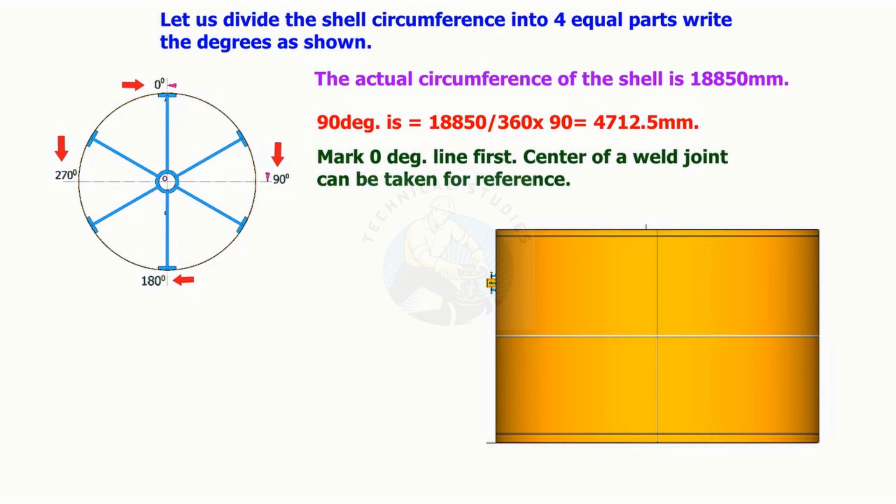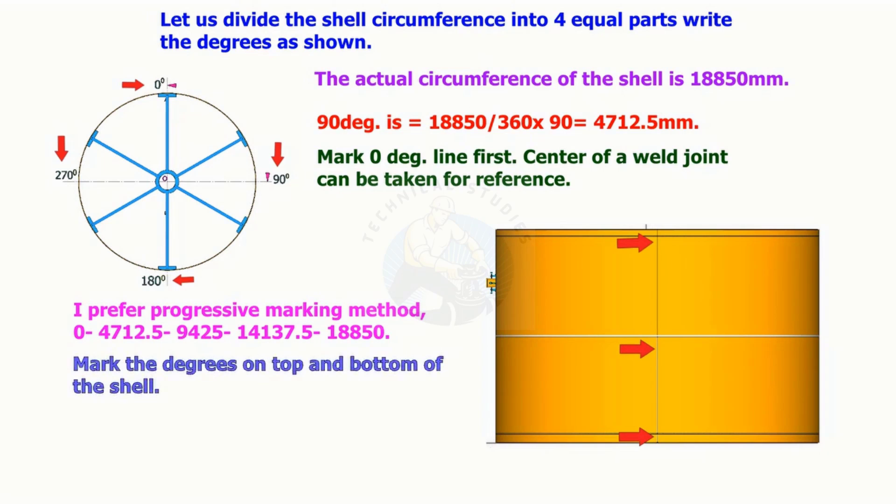First, mark the zero degree line. Center of a long seam shall be used for reference. Use the progressive method for marking the center lines. Mark the degree on the top and the bottom of the shell. Draw a line connecting these marks.